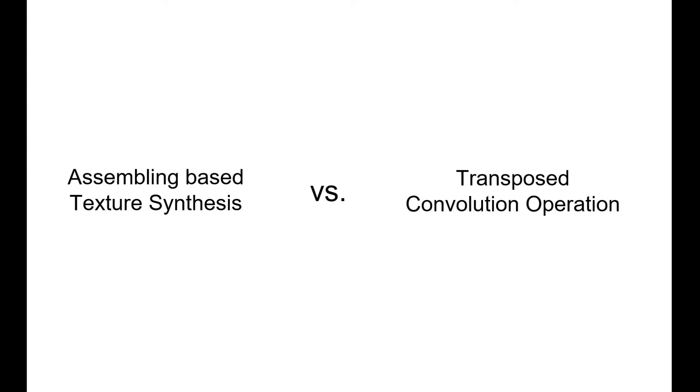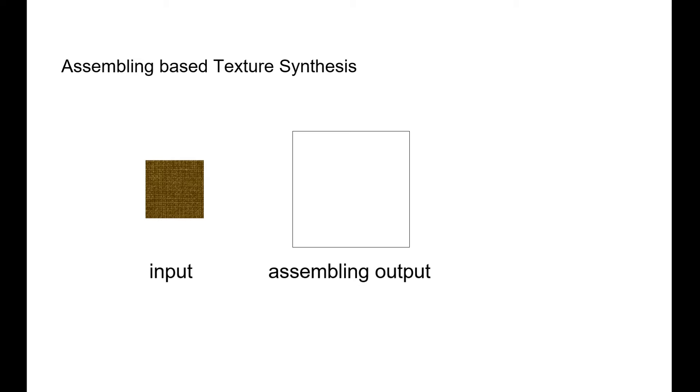Our technique is inspired by discovering that the behavior of traditional assembling-based texture synthesis is analogous to the behavior of the transposed convolution operation in deep learning. The way the traditional assembling-based method works is to find some plot positions to displace the input patch to the output grid.